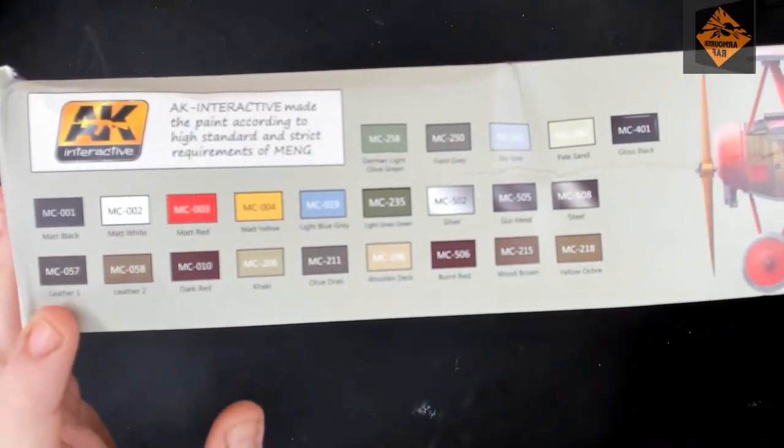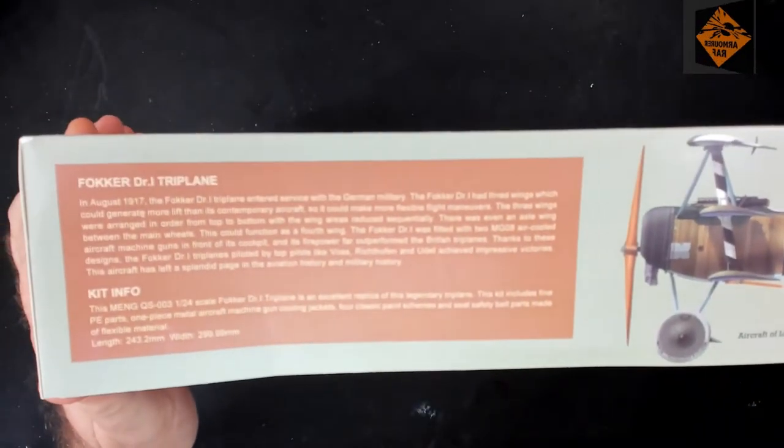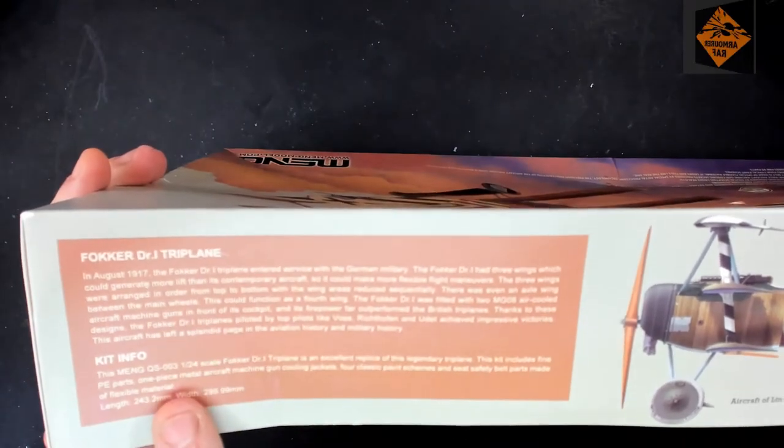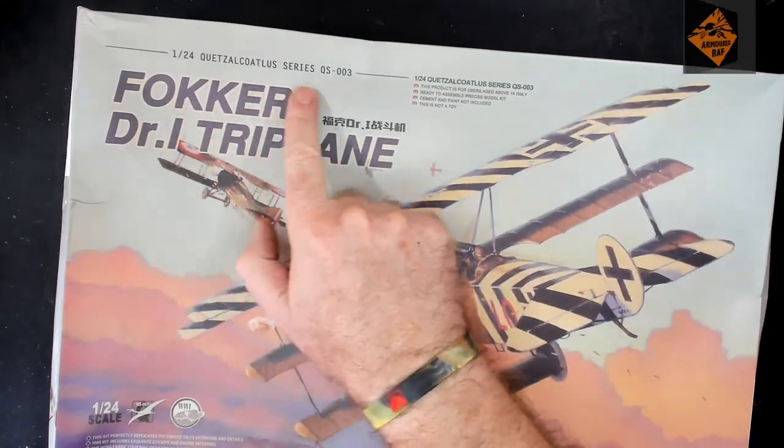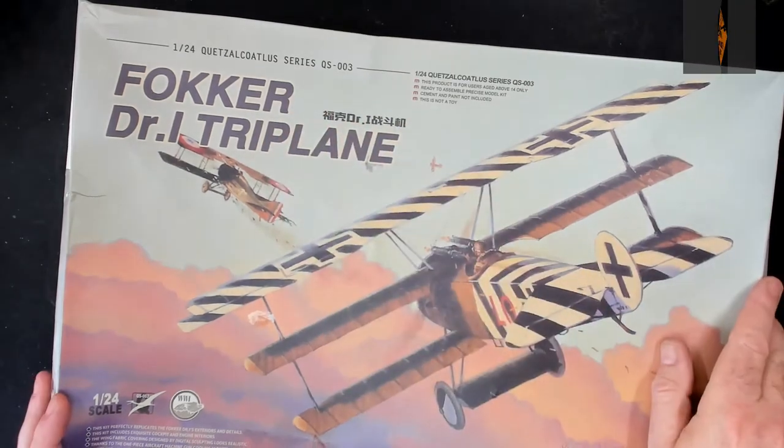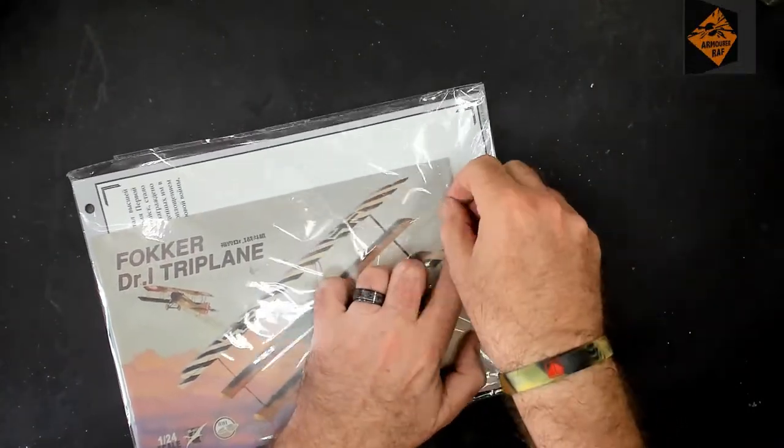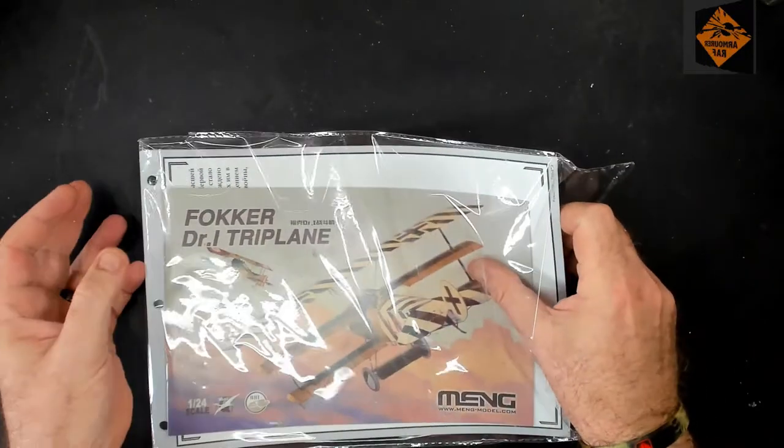I've got the usual color callouts on the side. Picture on that side, picture on that side. And blurb about the DR1 and the kit info. So this is Meng's Fokker DR1 triplane, 1/24th, Series QS 003.